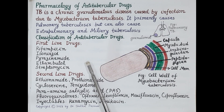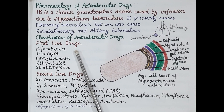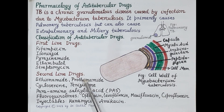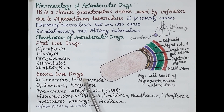Anti-tubercular drugs are classified as first-line drugs and second-line drugs. First-line drugs are commonly used for treatment of TB — they are highly efficacious with low toxicity. Second-line drugs are used as reserve drugs because their efficacy is less and toxicity is more; they are used for the treatment of multi-drug resistant TB.